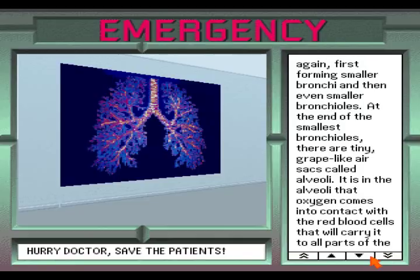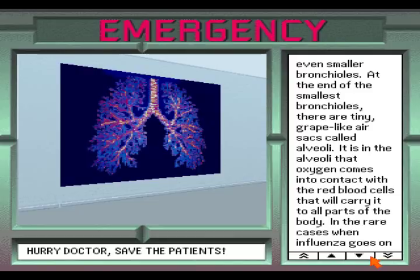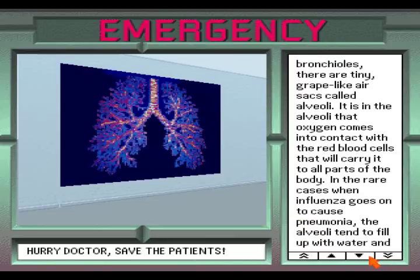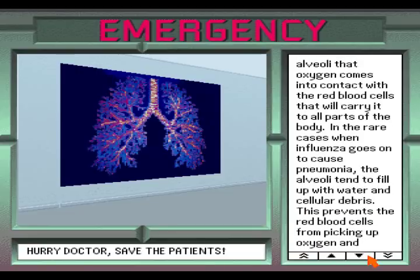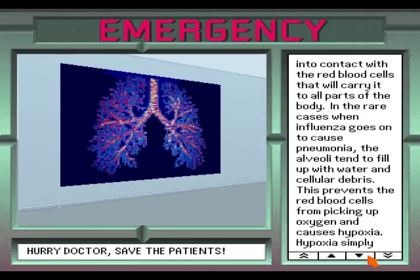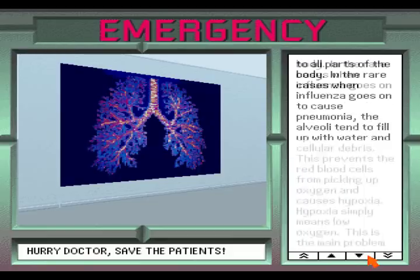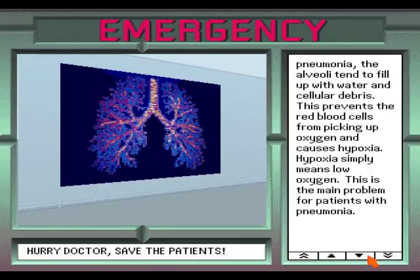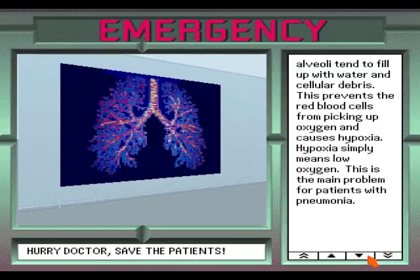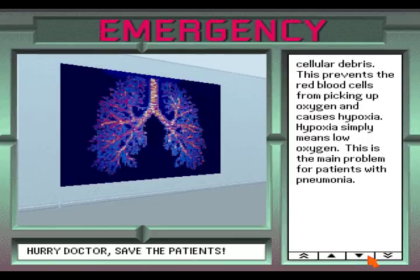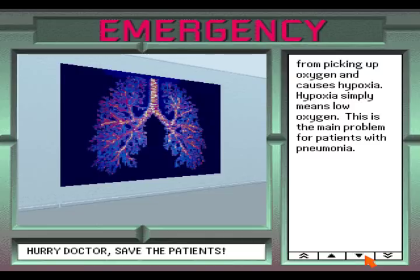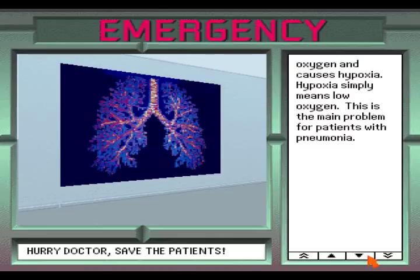At the end of the smallest bronchioles there are tiny grape-like air sacs called alveoli. It is in the alveoli that oxygen comes into contact with the red blood cells that will carry it to all parts of the body. In the rare cases when influenza goes on to cause pneumonia, the alveoli tend to fill up with water and cellular debris. This prevents the red blood cells from picking up oxygen and causes hypoxia — simply meaning low oxygen — which is the main problem for patients with pneumonia.